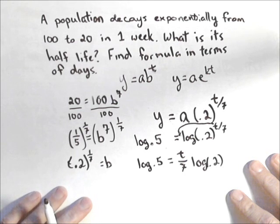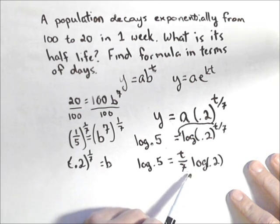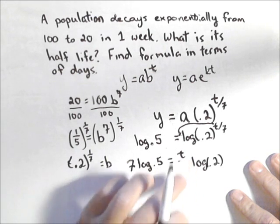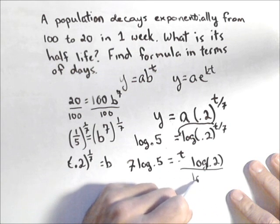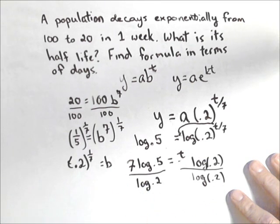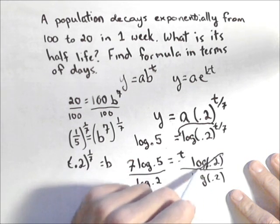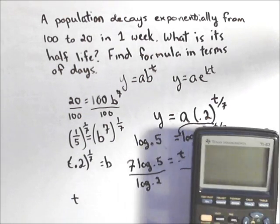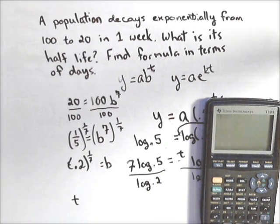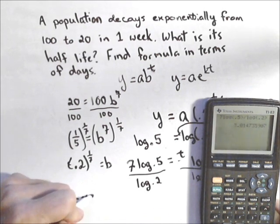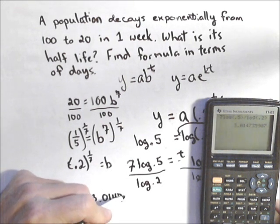We're almost there to getting our half-life — our half-life is a time. So I'm going to multiply both sides by seven, which gives me seven times log of 0.5 on one side and gets rid of the seven there. Then divide both sides by log of 0.2, and I've got my T. Calculating that: seven times log of 0.5 divided by log of 0.2 gives us a half-life of about 3.0147 days.